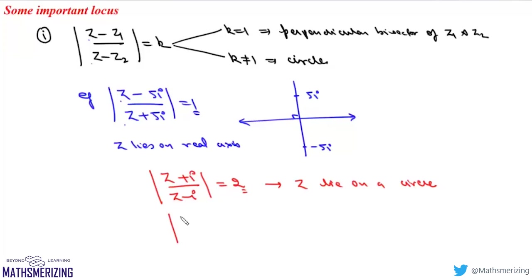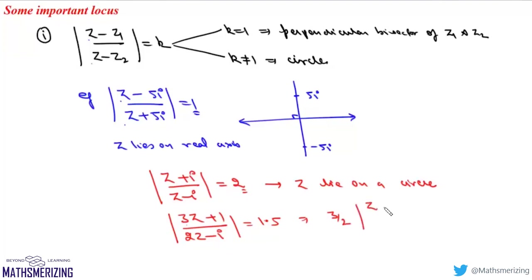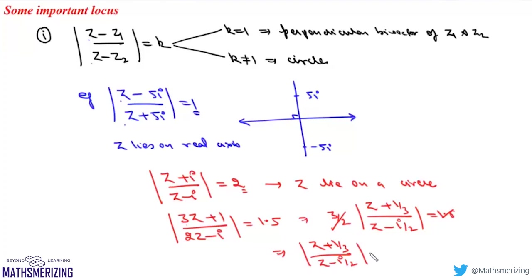There could also be cases like |3z + 1| / |2z - i| = 1.5. Here the coefficient of z is not 1, so we take 3 and 2 common from numerator and denominator to get (3/2) · |z + 1/3| / |z - i/2| = 1.5, and the 1.5 cancels. So we get |z + 1/3| / |z - i/2| = 1, and since the coefficient of z in numerator and denominator is 1 and the right-hand side is 1, z lies on a straight line — the perpendicular bisector of i/2 and -1/3.